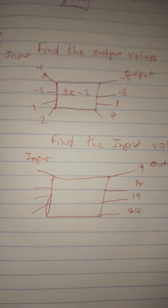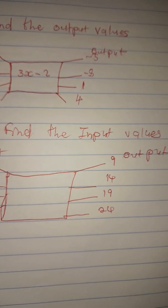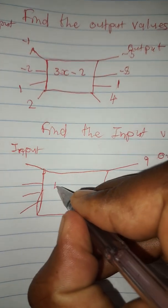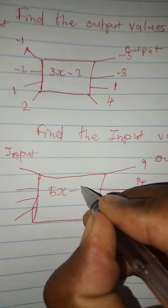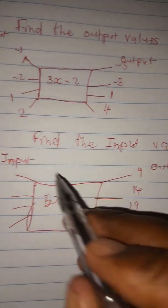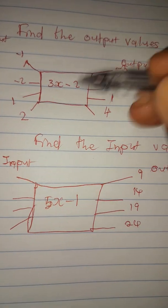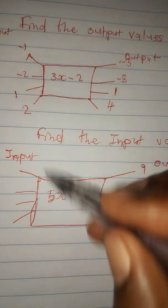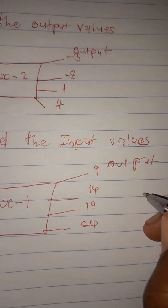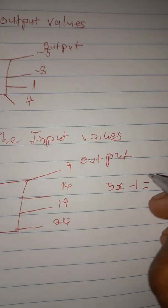At number two, we are required to find the input values. The rule is given as 5x minus one. You are required to find the x values. So we equate the rule to the first output value, which is nine: 5x minus one equals nine.